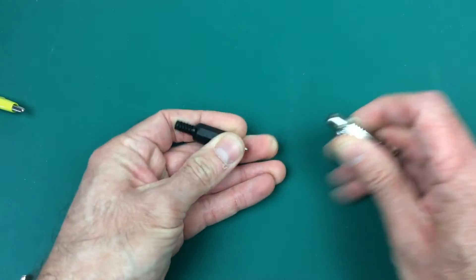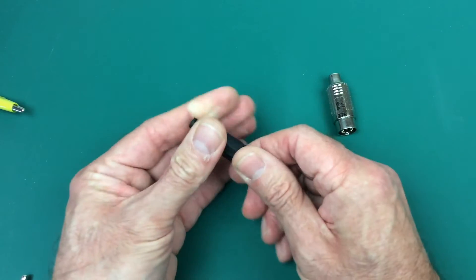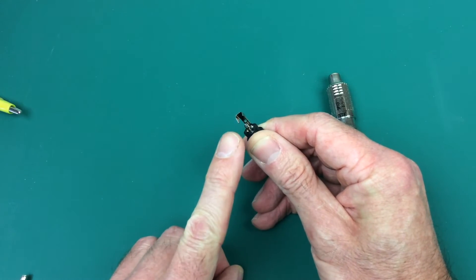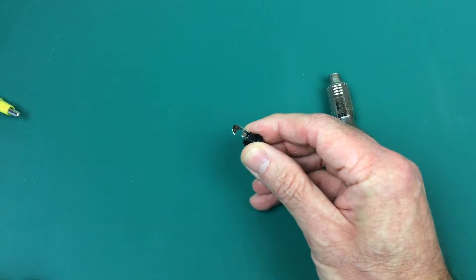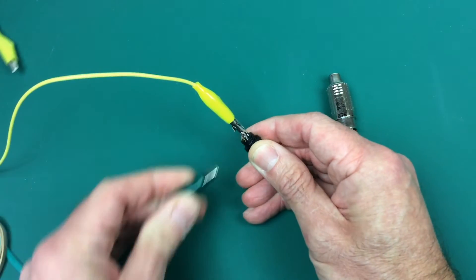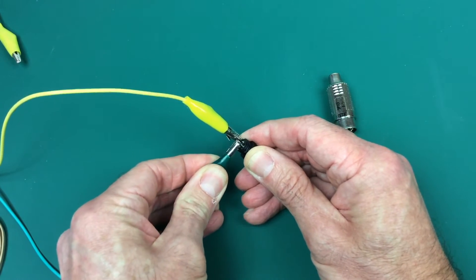First thing to do is to take the phono plug, unscrew the end. And there are two connectors. Now here we're just going to connect them with a crocodile clip. So one onto one, one onto the other.